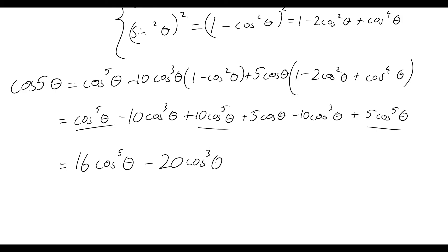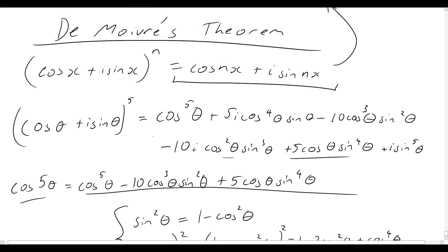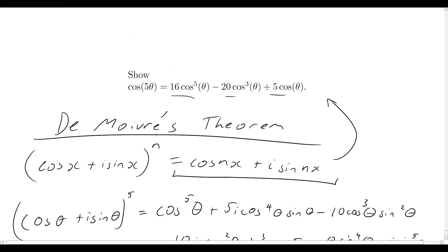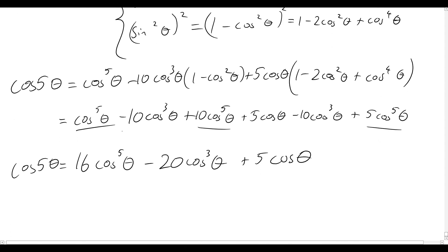Collecting like terms, we get minus 20cos³θ, and we're simply left with plus 5cosθ. And there we go — that is how you can show that cos(5θ) is equal to 16cos⁵θ minus 20cos³θ plus 5cosθ. Quite a bit of work goes into this, with the binomial expansions and getting the problem written out succinctly at the end. That's how you expand using de Moivre's theorem. If you enjoyed the video, please leave a like, subscribe, and comment — let me know what you'd like me to cover in the future. Appreciate it, see you next time!